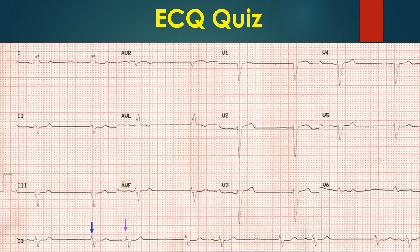The rhythm strip shows sinus bradycardia with junctional escape beats, marked by blue arrows, without preceding P-waves. They have the same QRS morphology as the succeeding sinus beat, marked by a violet arrow. The sequence of junctional escape followed by a sinus capture beat continues throughout the rhythm strip.